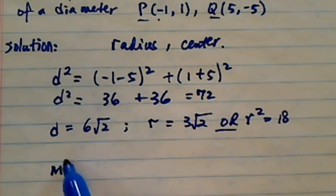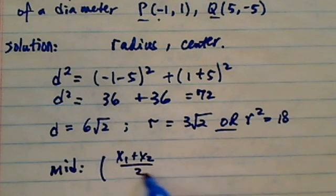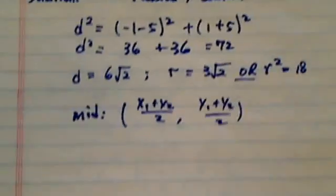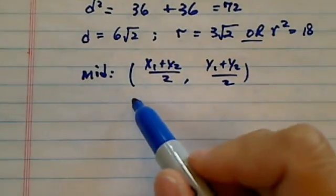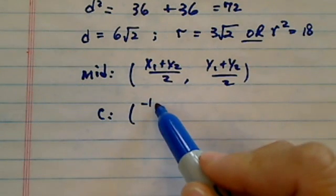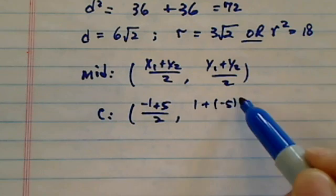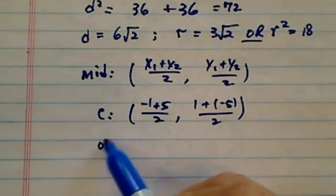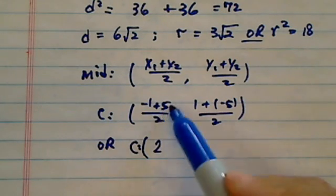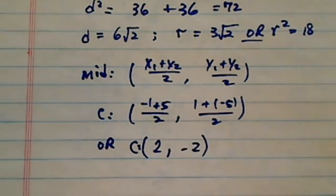The midpoint formula says midpoint is x1 plus x2 over 2, y1 plus y2 over 2. That's going to be our center. So our center here is minus 1 plus 5 over 2, 1 plus minus 5 over 2. Our center is at 2 because this is 4, and 4 divided by 2 is 2, and here I have minus 2.